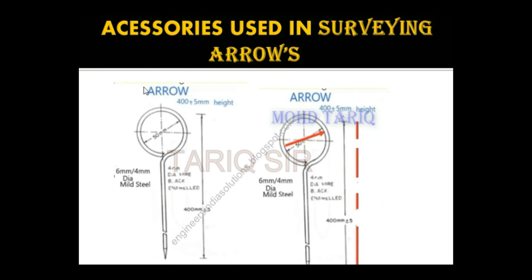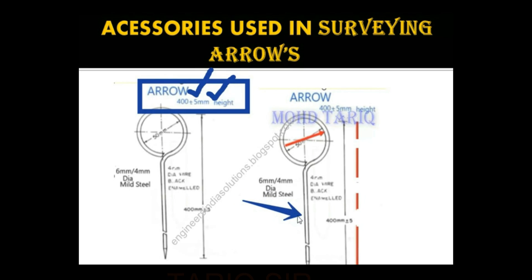Next over here are the arrows. This arrow is about 400 mm plus or minus 5 mm in height, and it is made out of mild steel wire which is about 4 to 6 mm in diameter. This is a brief intro about some of the parts that we are going to use.